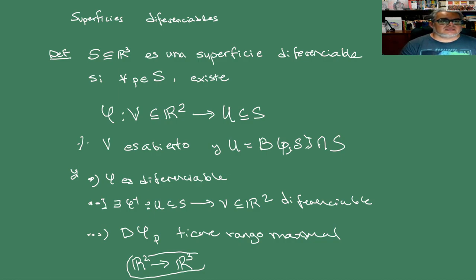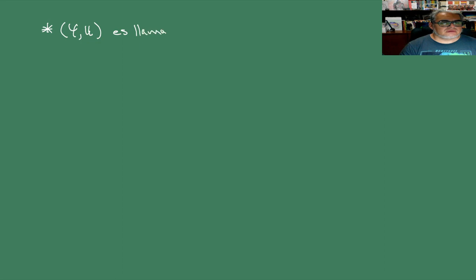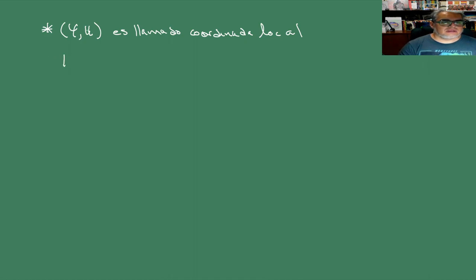El par (φ, U) es llamado sistema de coordenadas o coordenadas locales. Lo que quisiéramos es tener una de estas para cada p en S, entonces quisiéramos hacer un sistemita para cada p en S, tal que cuando tomemos la unión de los U_p obtengamos a toda S. Es decir, vamos a cubrir con estos conjuntos abiertos relativos a S, pero además en cada uno de esos abiertos tenemos una función biyectiva, localmente biyectiva, diferenciable, con inversa diferenciable.